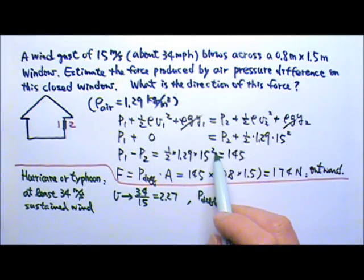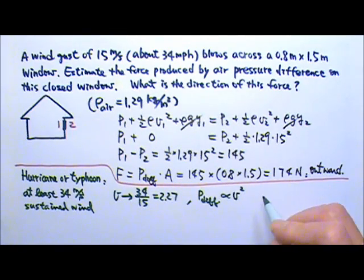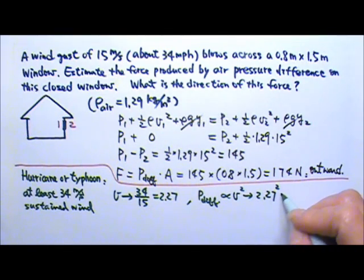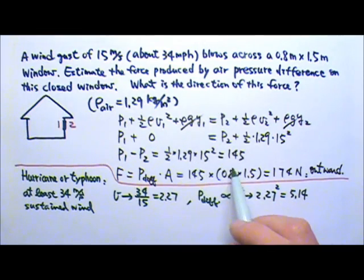Since the pressure difference is 0.5 times rho v squared, this is proportional to the speed squared. That means it would change by a factor of 2.27 squared, which is 5.14 times that value.